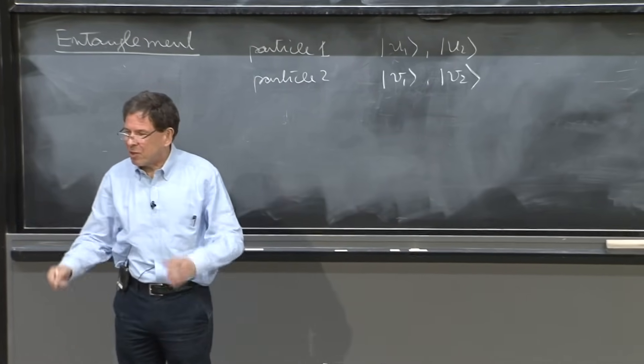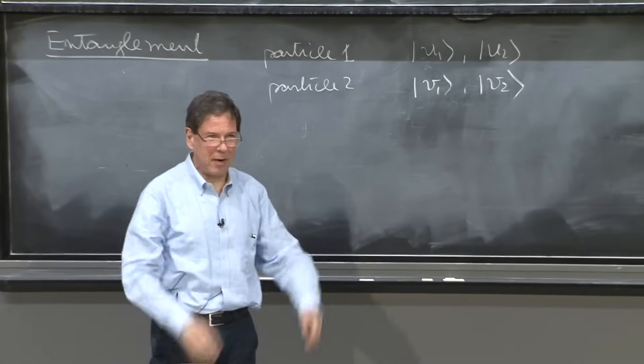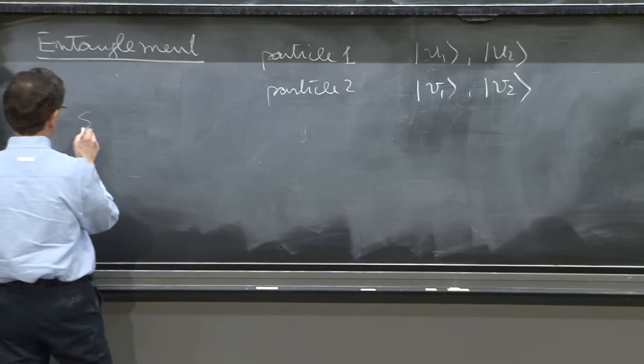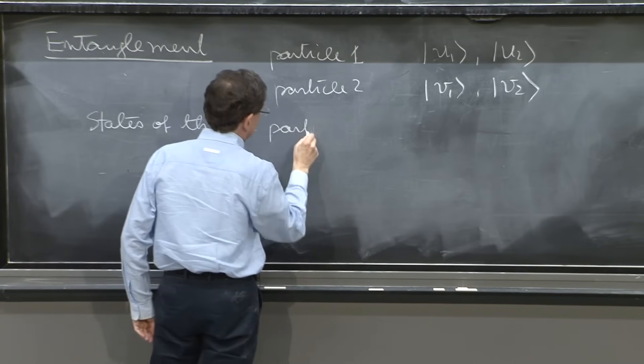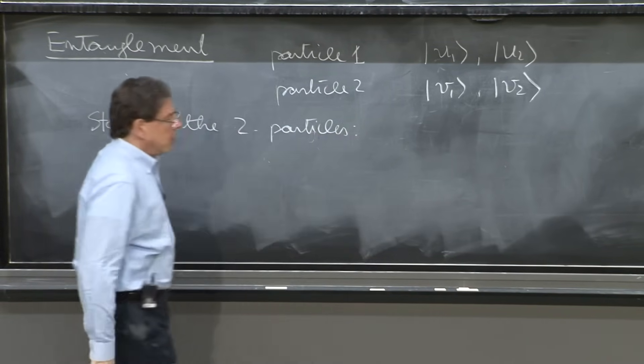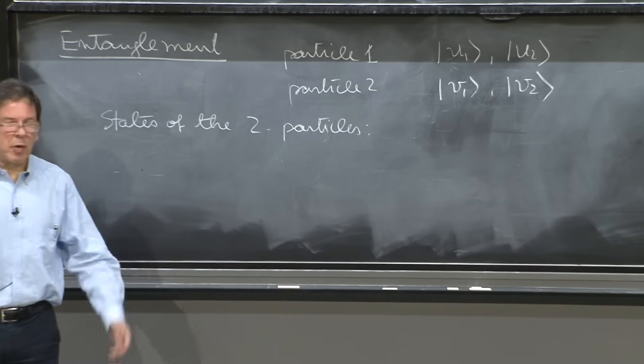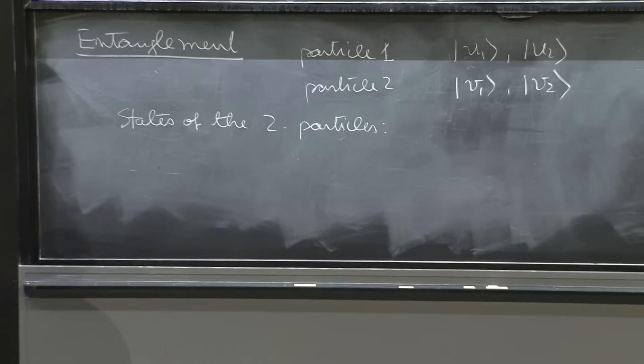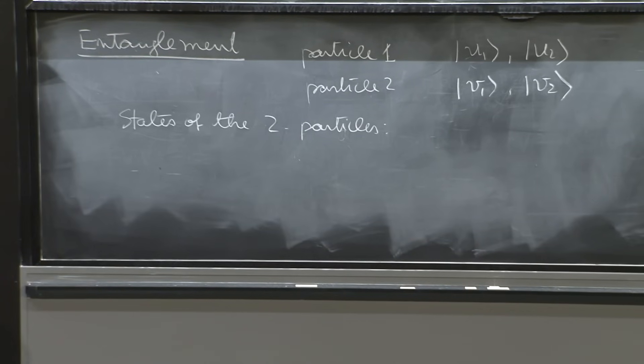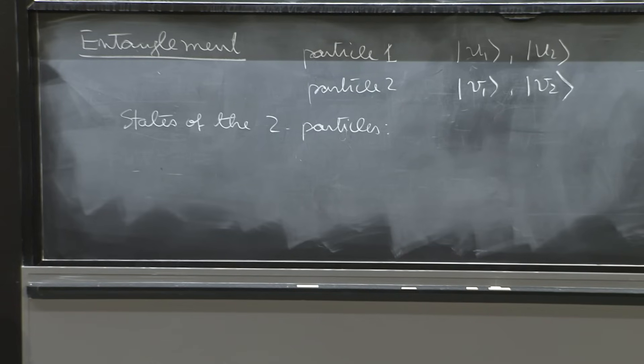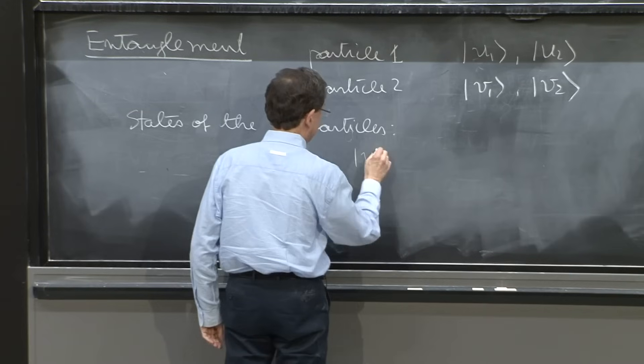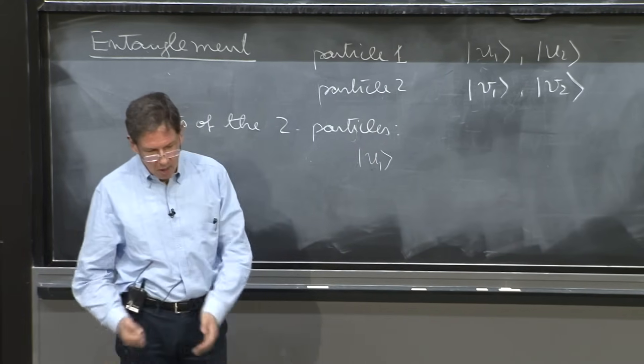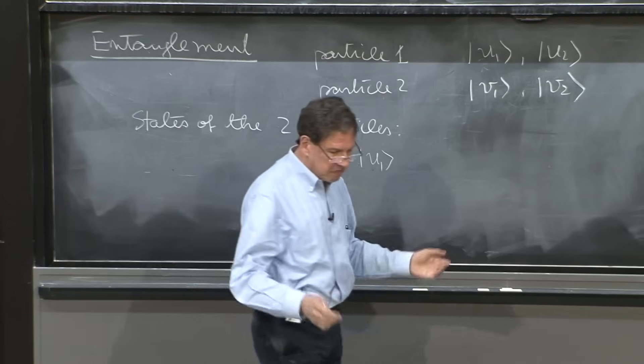Now you want to describe the full system, the quantum state of the two particles. It seems reasonable that to describe the state of the two particles, they're not interacting, I should tell you what particle 1 is doing and what particle 2 is doing. So particle 1 could be doing this, could be u1.